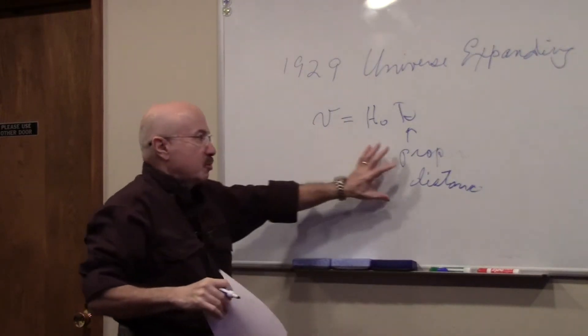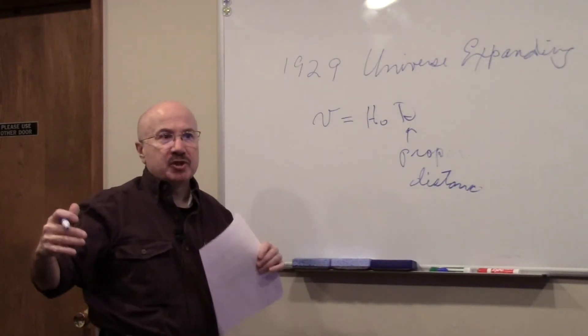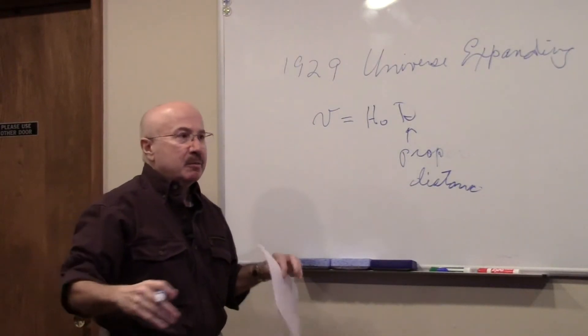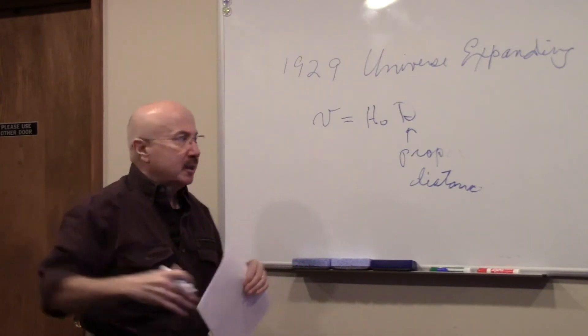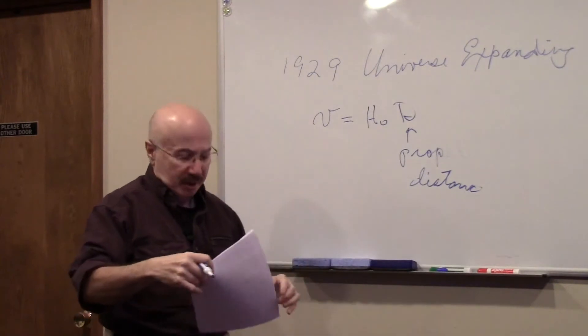What is proper distance? Proper distance is the measurement of how far the galaxy is from us at an instant in time. Because a little bit later, it'll be a little bit further away. So this is the proper distance—it's an instant in time.